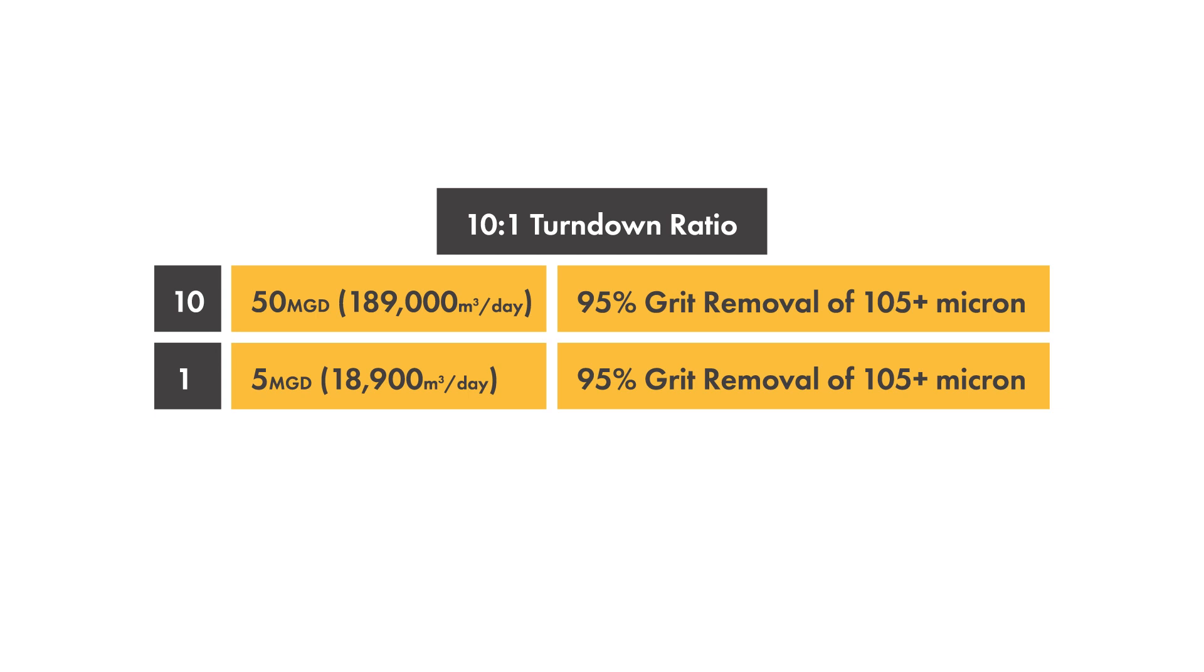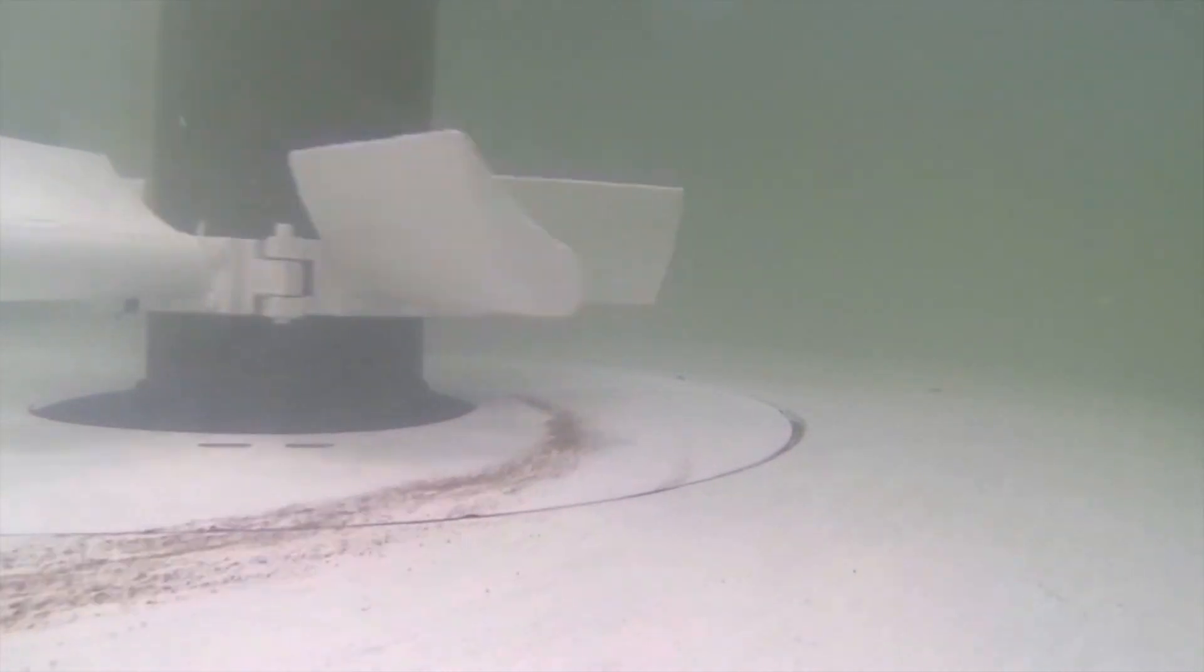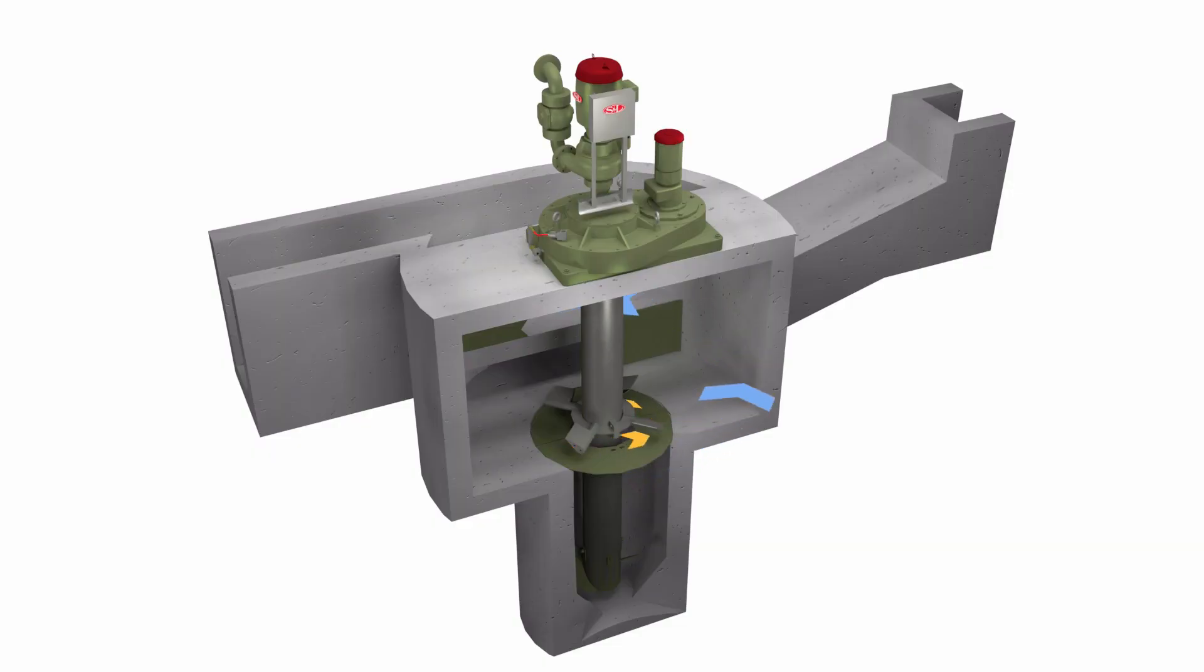The axial flow propellers sweep grit along the floor in a moving bed towards the hopper opening and also lift the organics back into the flow to continue moving them to the next stage of treatment.